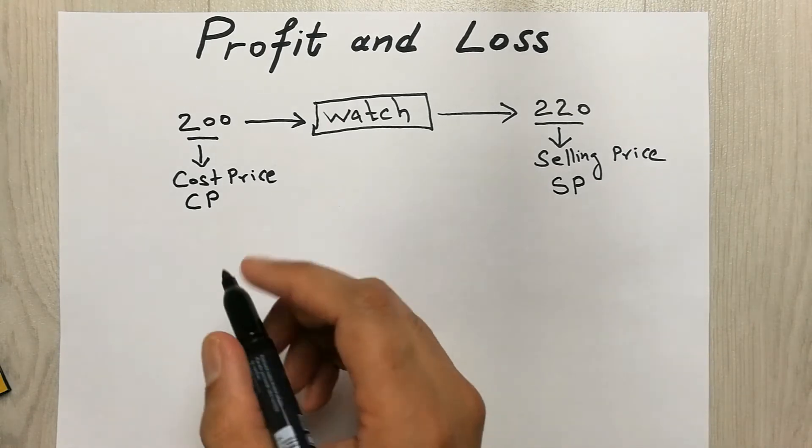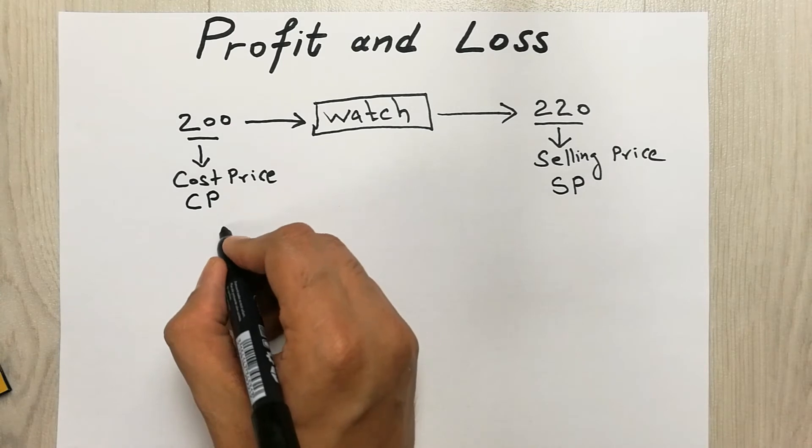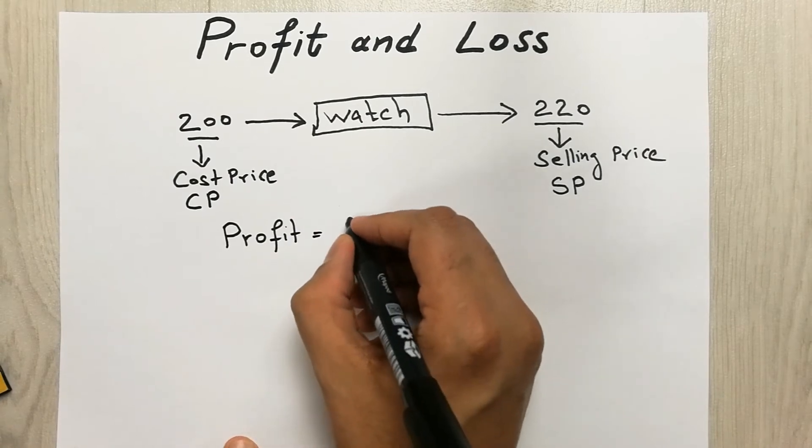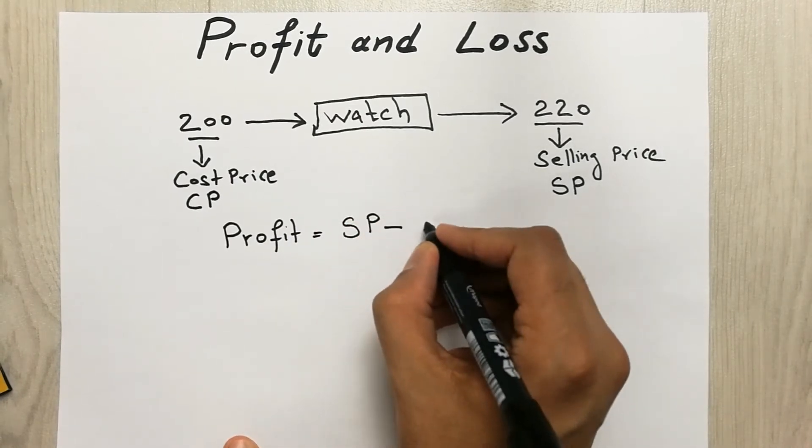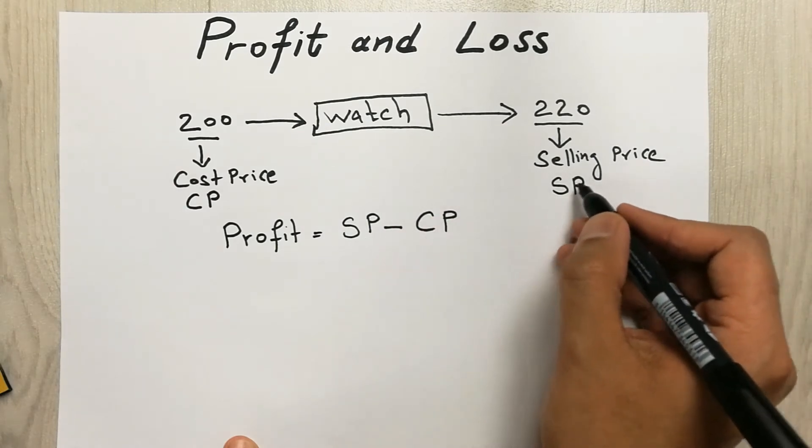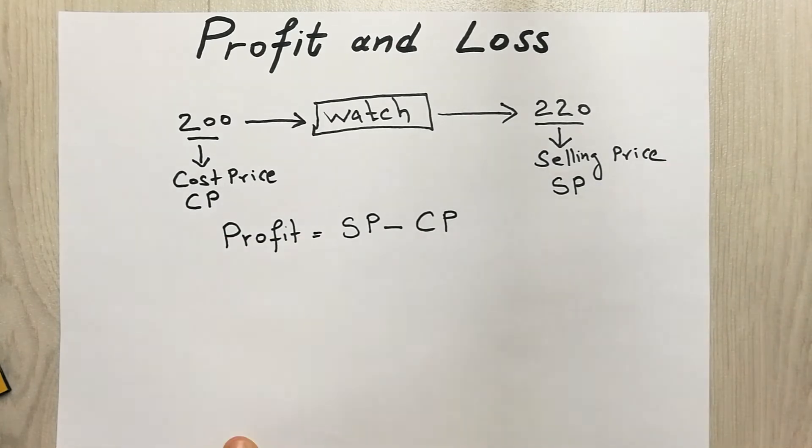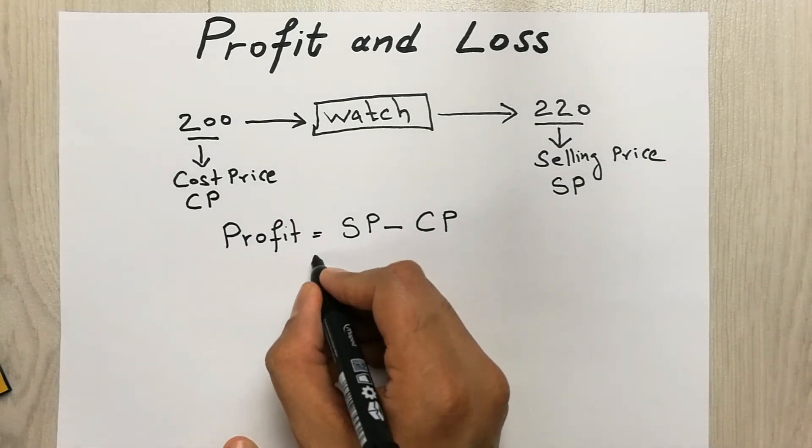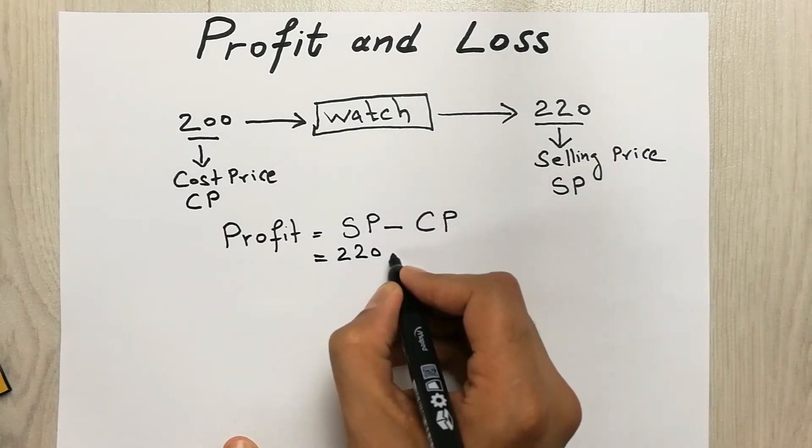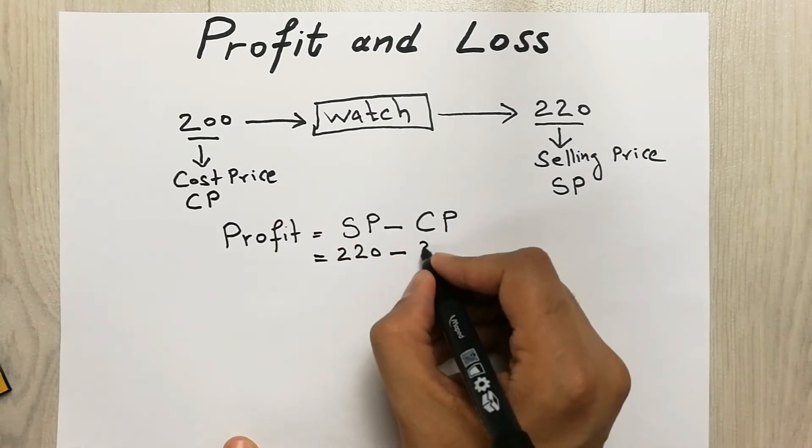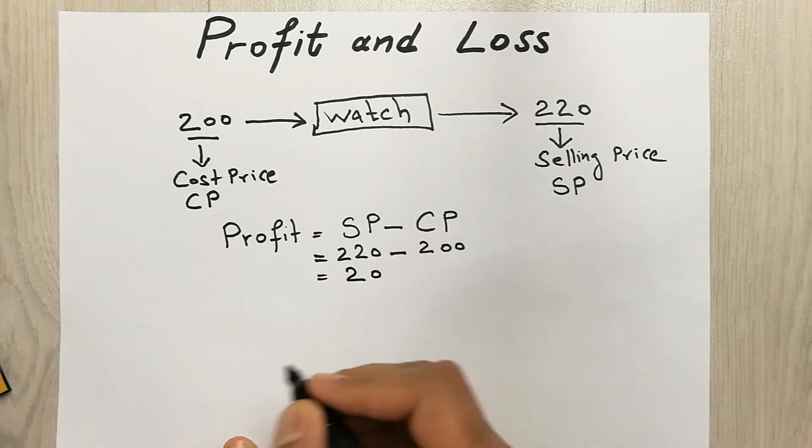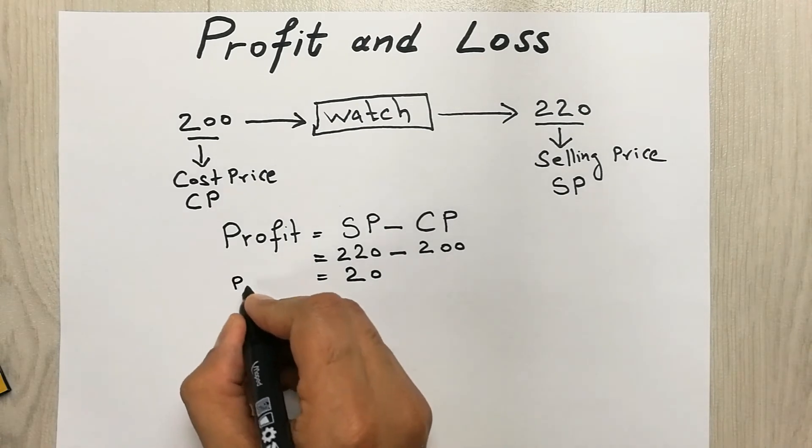So now what we're going to do, we will put the formula and the formula for profit is selling price minus cost price, so SP minus CP. Now we will put the values. So selling price is 220 minus cost price is 200, so our answer will be 20 rupees or dollars. This is our profit.